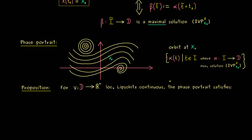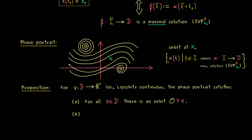I could summarize what comes now by saying that the orbits split up the whole phase portrait, and by this we essentially mean two important points: existence and uniqueness. For existence: for all points in the domain D we have an orbit — there are no gaps in the phase portrait, each point has a corresponding orbit. For uniqueness: each point can only have exactly one orbit, meaning two orbits O1 and O2 cannot cross. If they have a non-empty intersection, then the only possibility is that they were already the same.